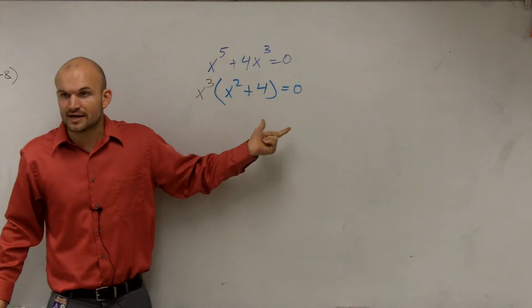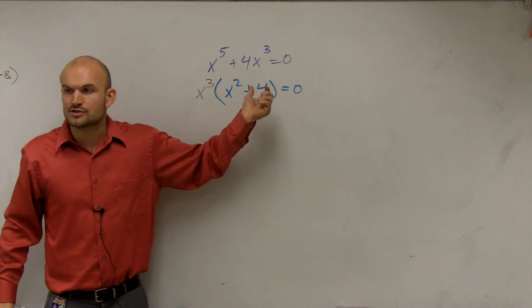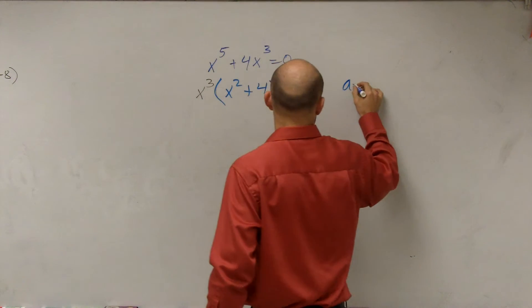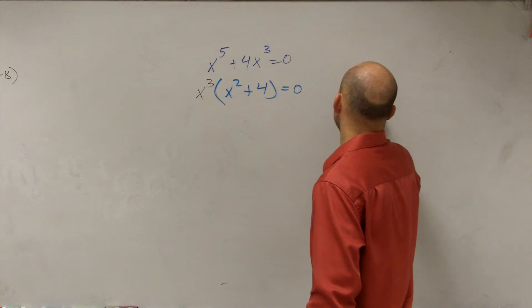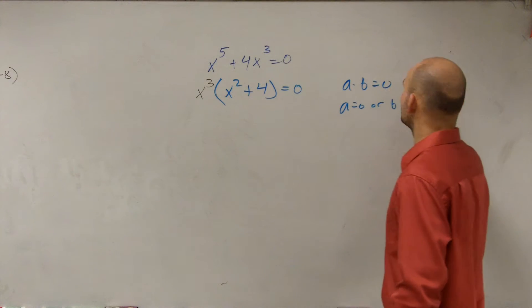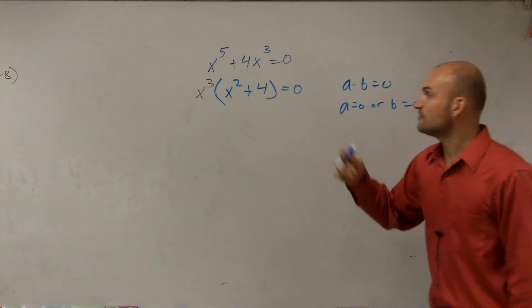So now we have a product that's equal to 0. So we can apply the 0 product property. a times b equals 0, a equals 0, or b equals 0, right? The 0 product property.